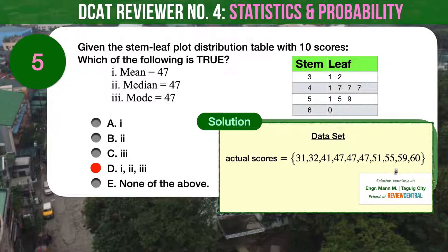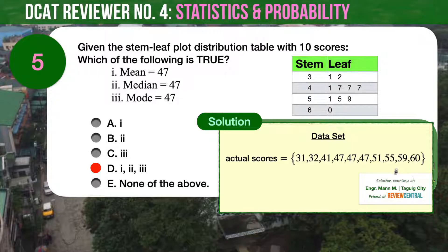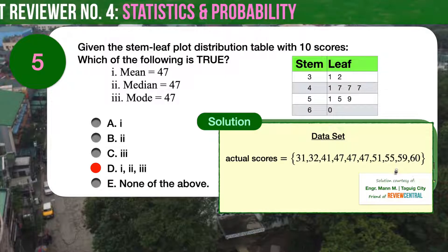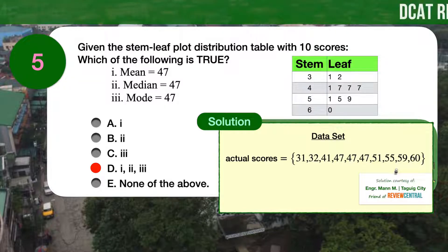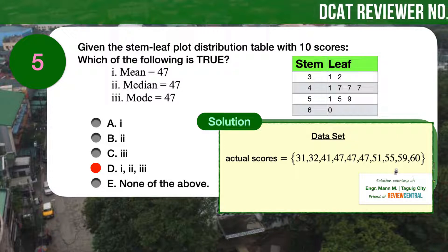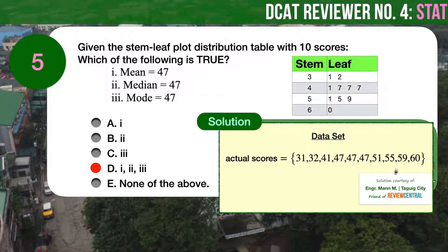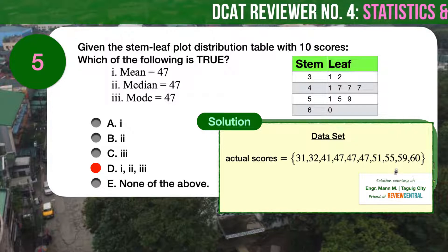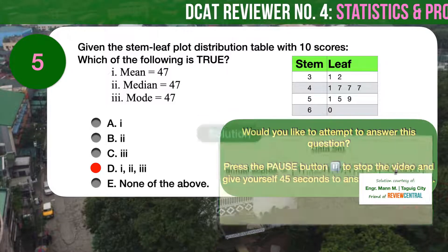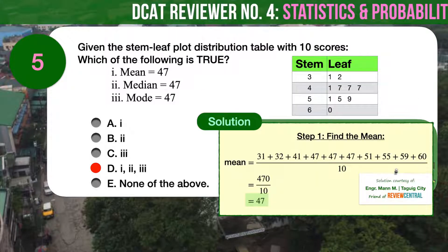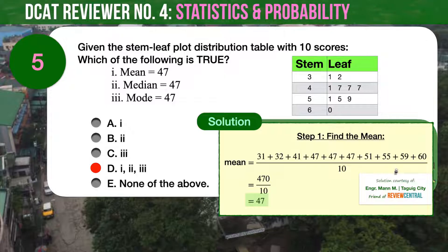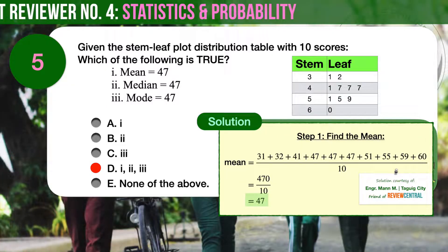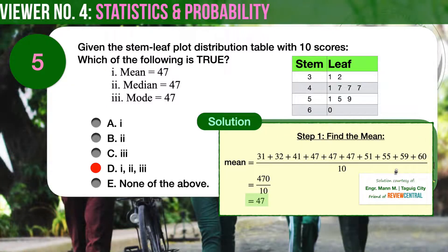Going back to the question, from the given stem-leaf distribution table, we can derive the actual scores to be 31, 32, 41, 47, 47, 47, 47, 51, 55, 59, and 60.